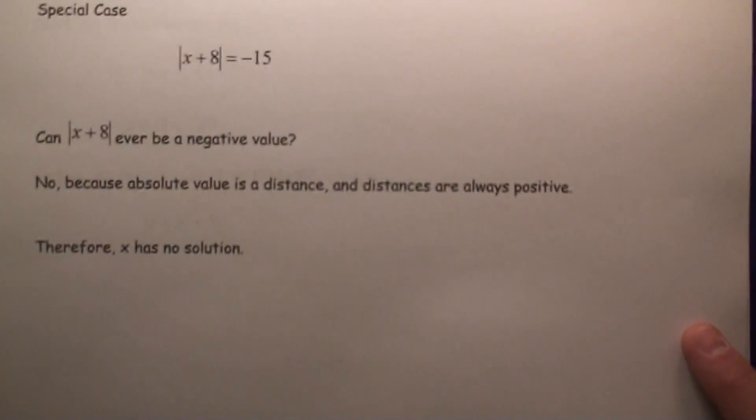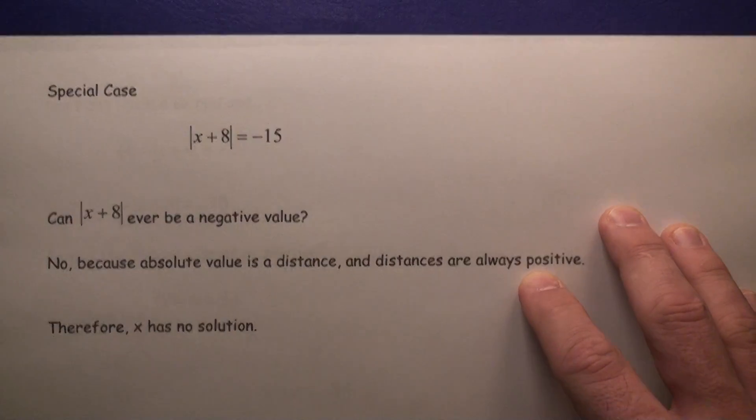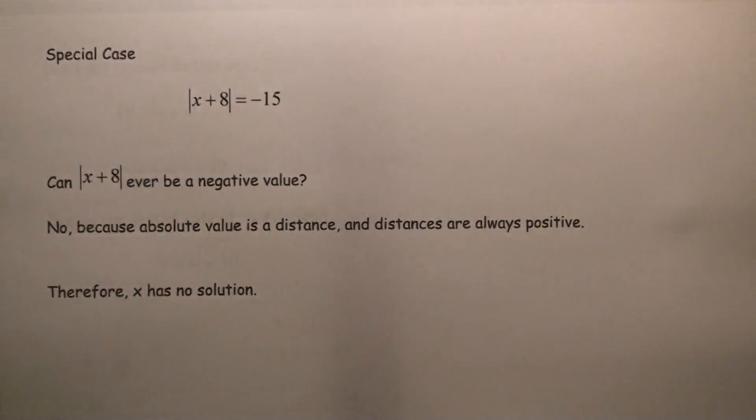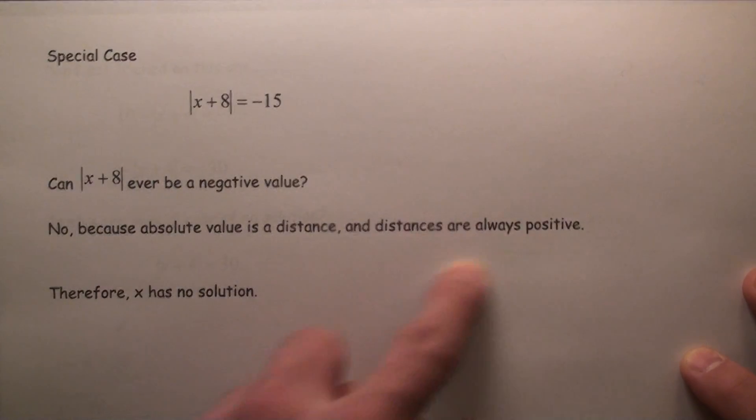Last one here, special case. What if you have the absolute value of x plus 8 equals negative 15? Can the absolute value of anything ever be negative? No, because the absolute value is distance, and distances are always positive. Therefore, this has no solution.